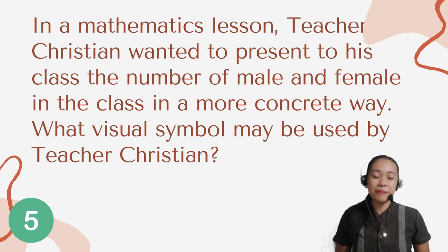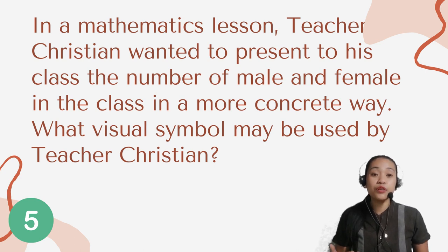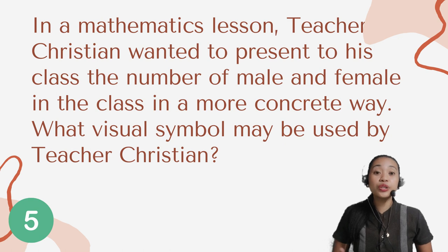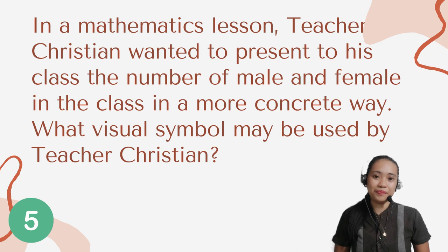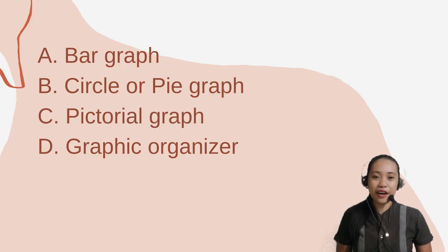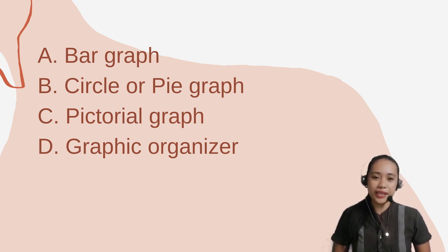Question number 5. In a mathematics lesson, teacher Christian wants to present to his class the number of male and female students in a more concrete way. What visual symbol may be used by teacher Christian? Letter A: Bar graph. B: Circle or pie graph. C: Pictorial graph. Or D: Graphic organizer.